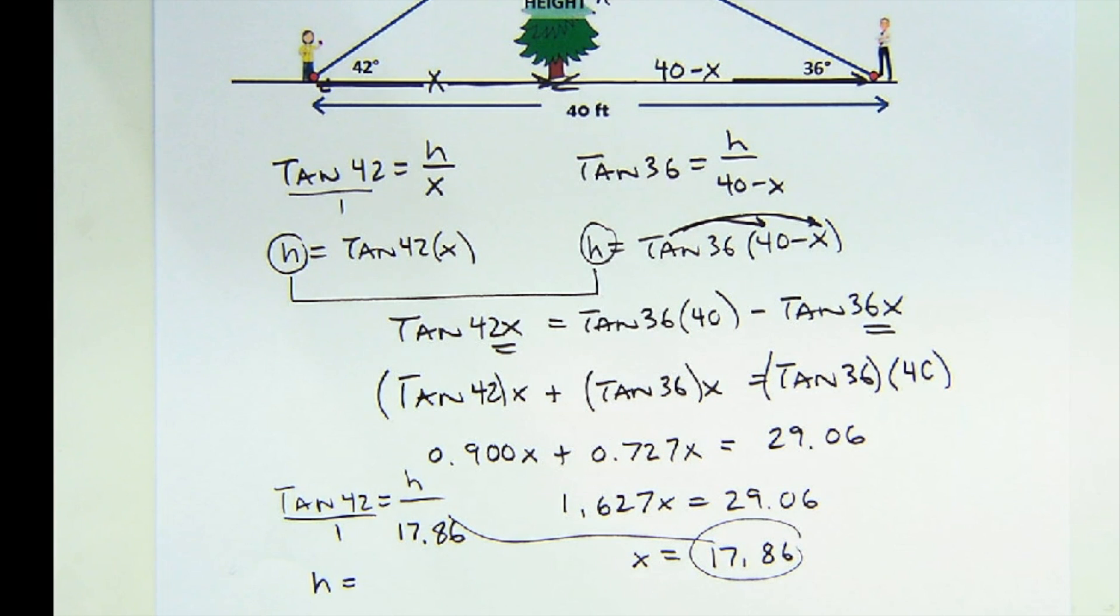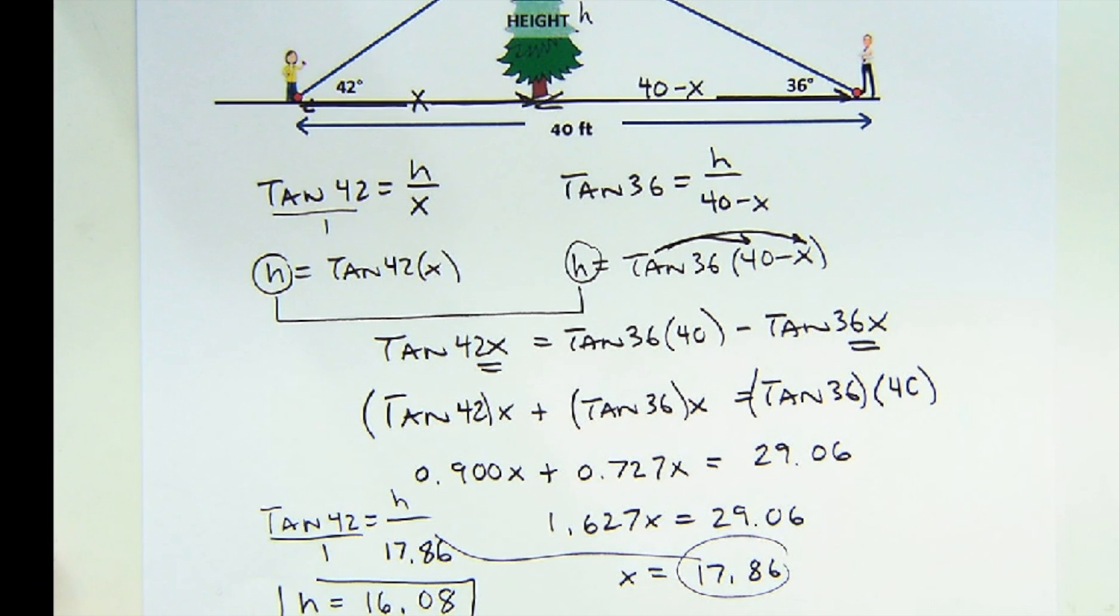And I get my height to be 16.08, and they wanted it to the nearest foot, so our answer would be it's a 16 foot tall tree. This is a great problem. It's a little system of equations, a nice blast from the old algebra one stuff, and a good context for trigonometry.